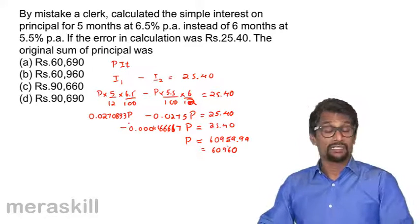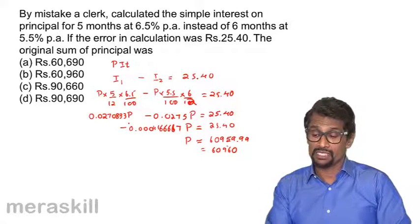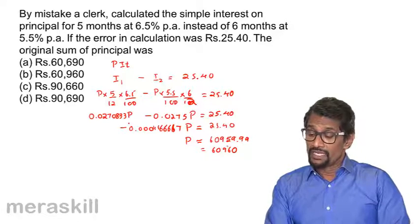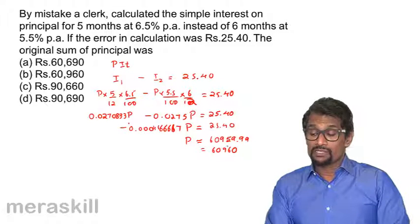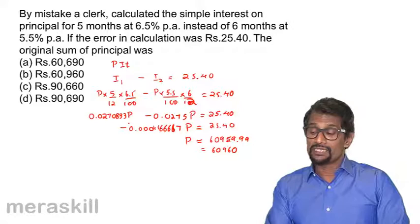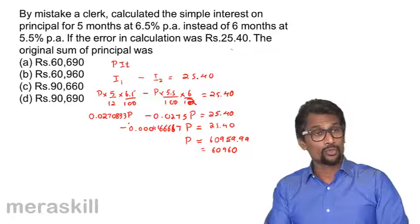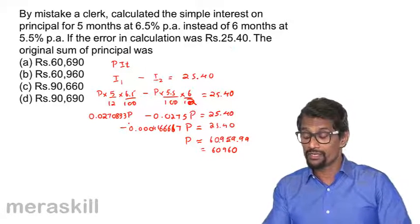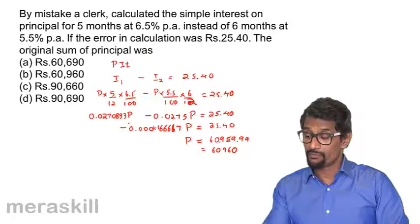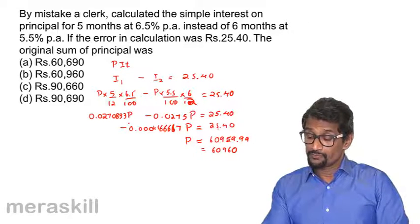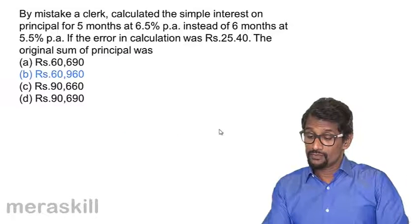So roughly 25.40P turns out to be 60,959.99, which is roughly 60,960. So the principal turns out to be 60,960. Instead of calculating—we calculated 6.5% per annum for five months instead of six months, so the difference is so and so. Hence you can equate it and you get it accordingly. That is Rs. 60,960.